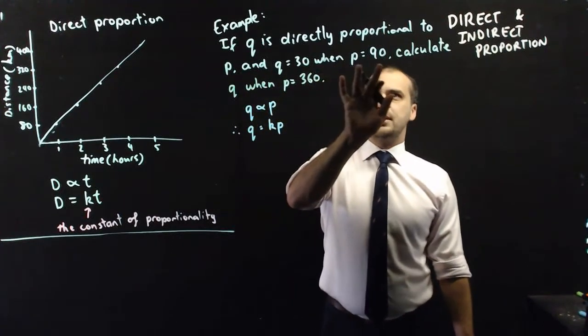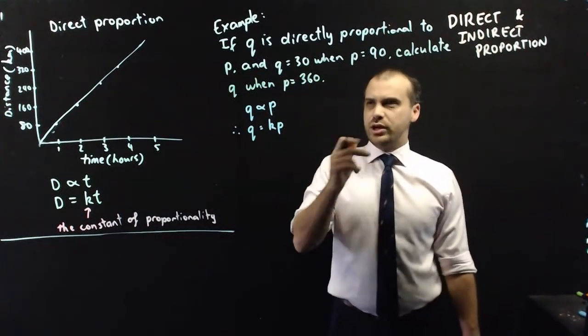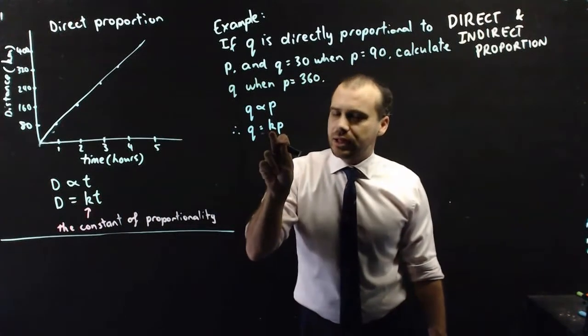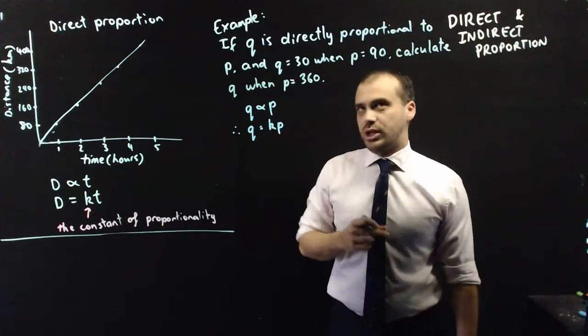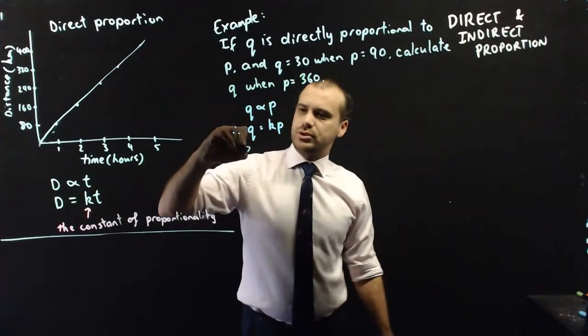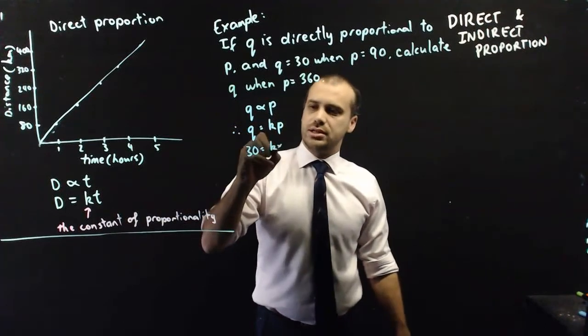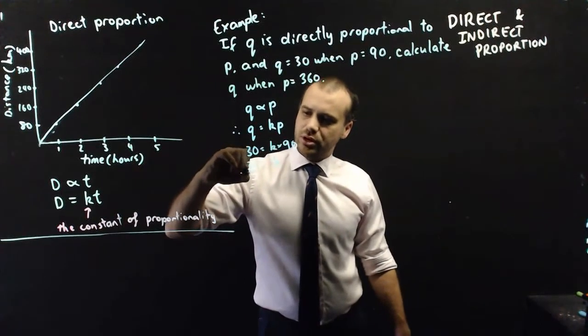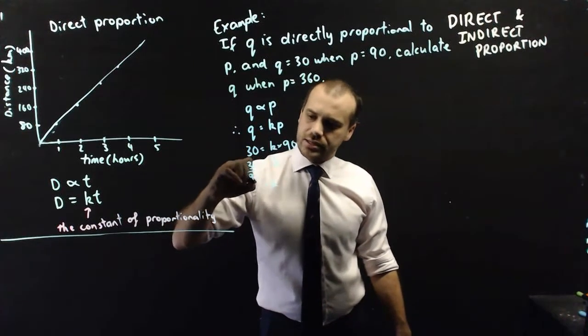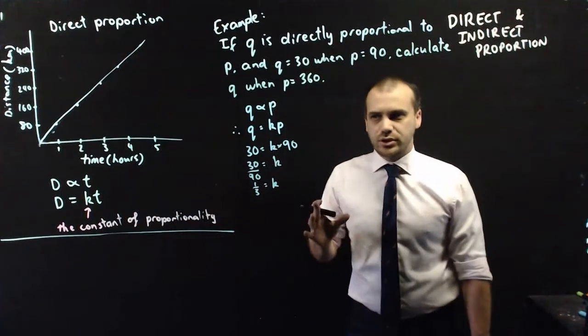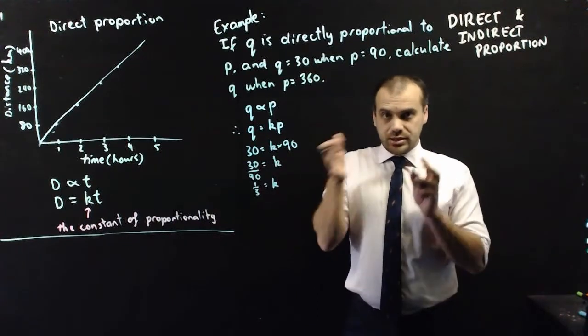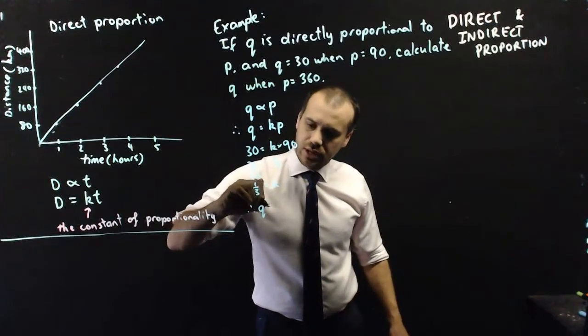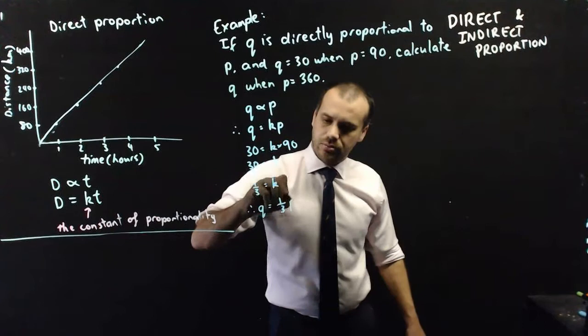q equals 30 when p equals 90. All right, if I know what q and p are at a single moment, I can calculate the constant of proportionality. So, q equals 30, k times 90. Okay, so that means that k is equal to 30 over 90. k is equal to 1 third. So, now I have a rule connecting p and q. I know, therefore, q equals 1 third p.